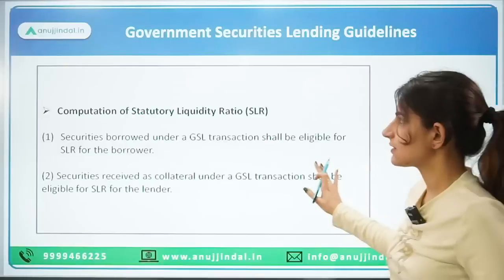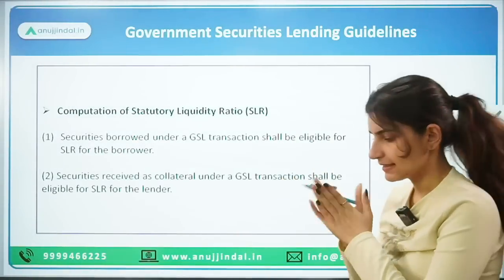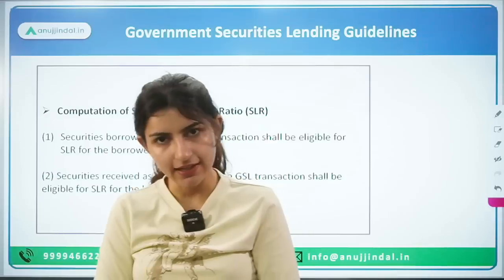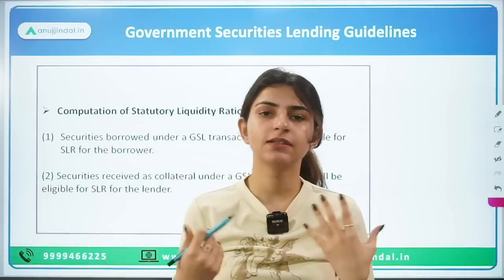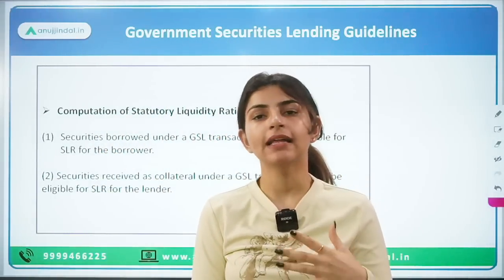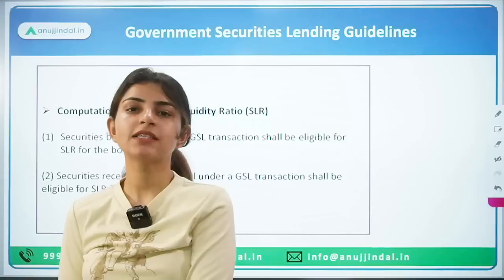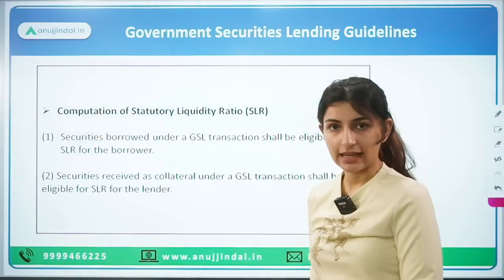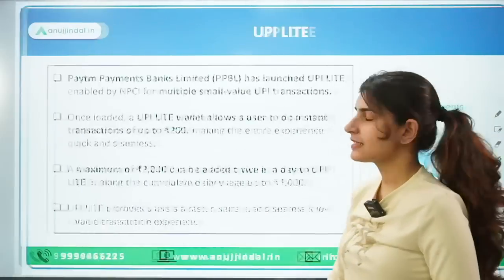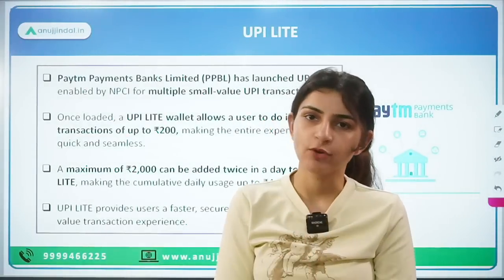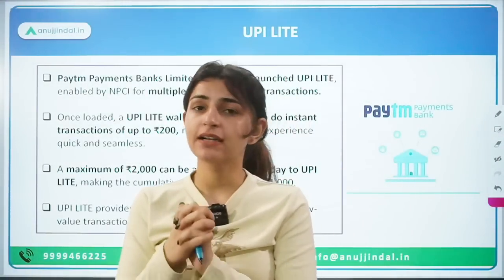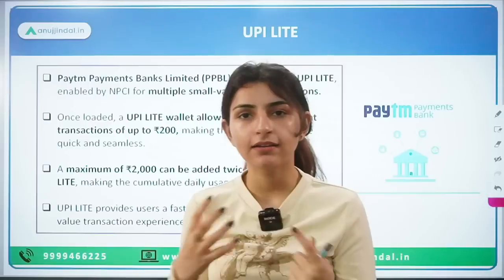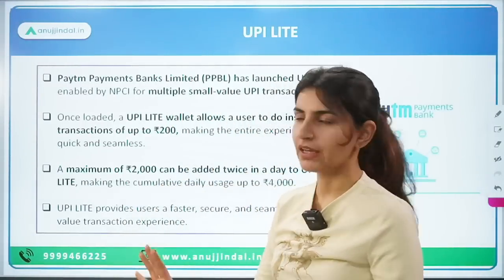This concludes the news about government securities lending guidelines. These are currently draft guidelines, and the RBI is inviting discussions and suggestions. After receiving feedback, final guidelines will be issued. Key points to remember: SLR-eligible securities, the tenor of one to 90 days, the delivery mechanism, and the overall GSL process.